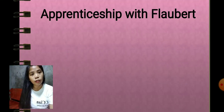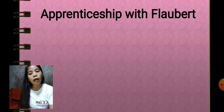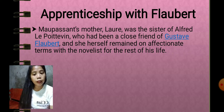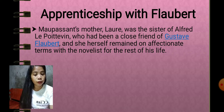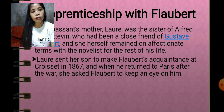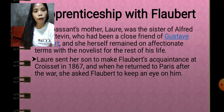Regarding his apprenticeship with Flaubert: Maupassant's mother Laure was the sister of Alfred Le Poittevin, who had been a close friend of Gustave Flaubert, and she remained on affectionate terms with the novelist. Laura sent her son to make Flaubert's acquaintance at Croisset in 1867, and when he returned to Paris after the war, she asked Flaubert to keep an eye on him.